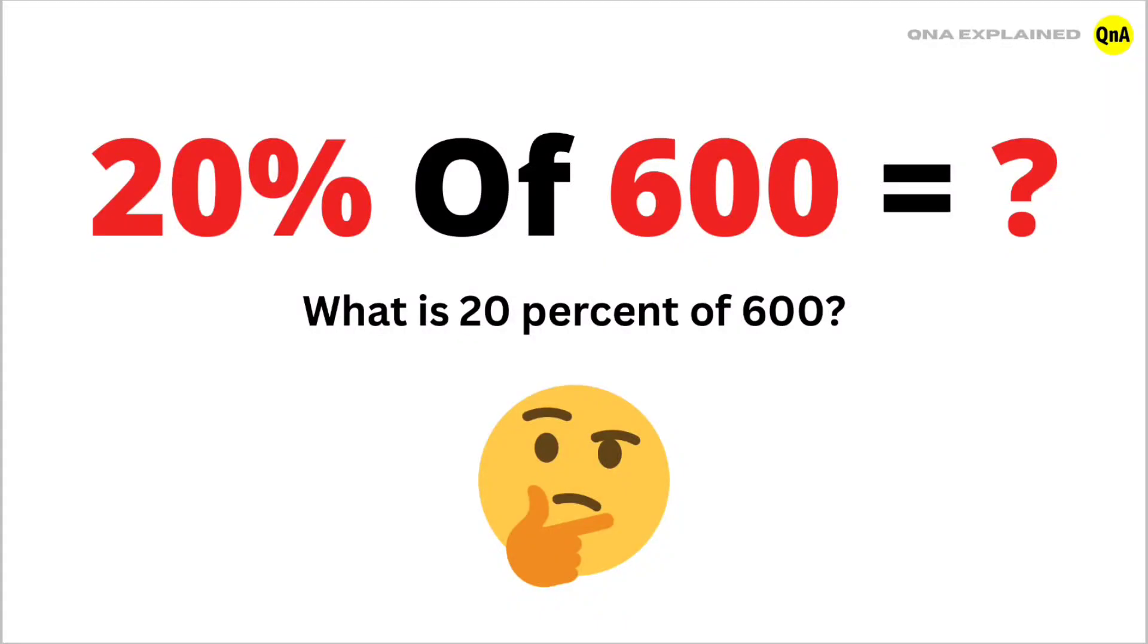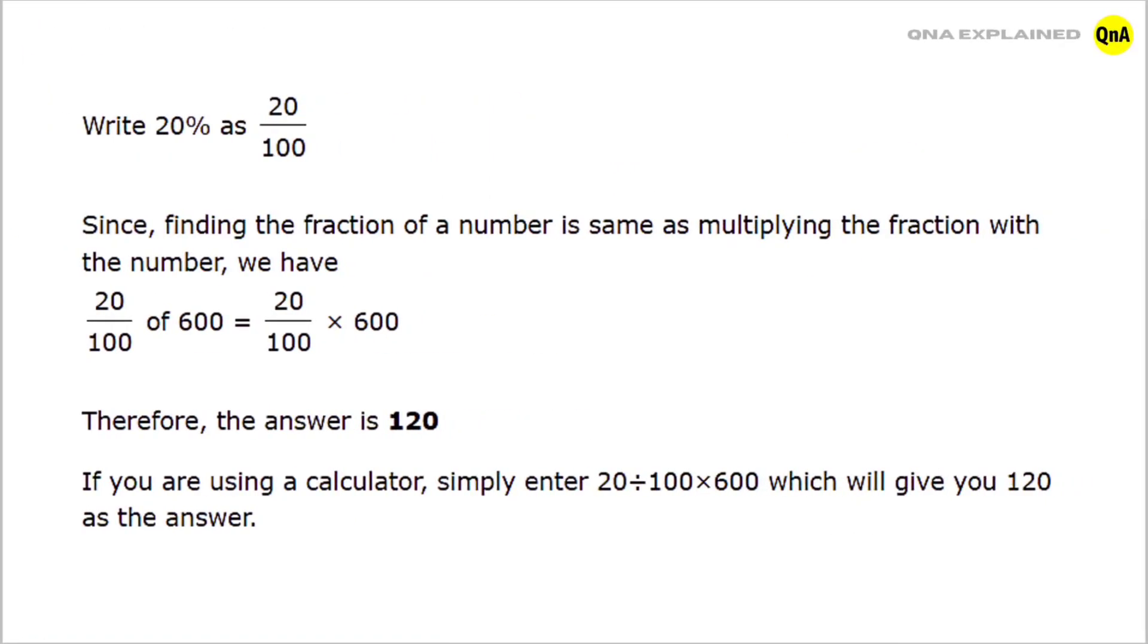What is 20 percent of 600? Write 20 percent as 20 upon 100. Since finding the fraction of a number is same as multiplying the fraction with the number, we have 20 upon 100 of 600 is equal to 20 upon 100 into 600.